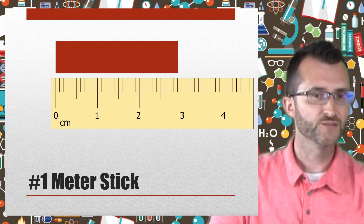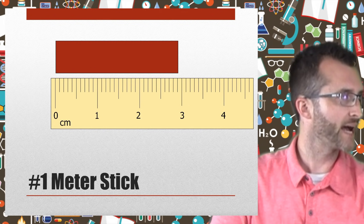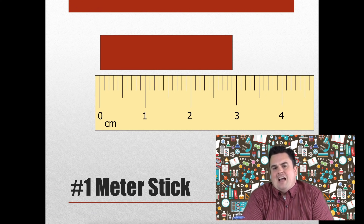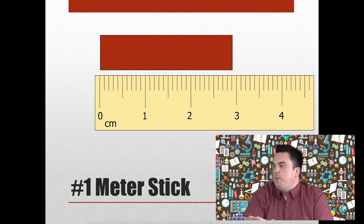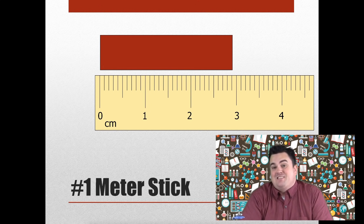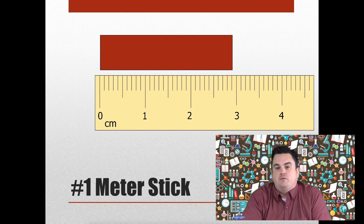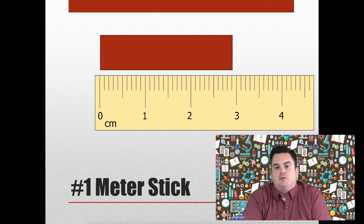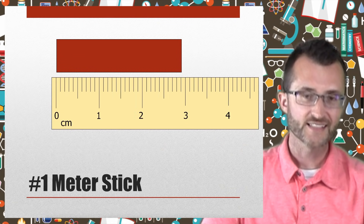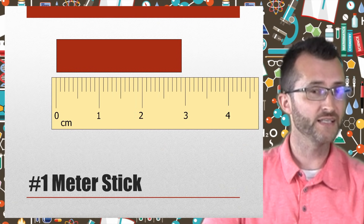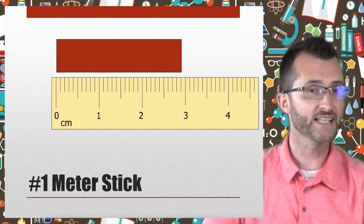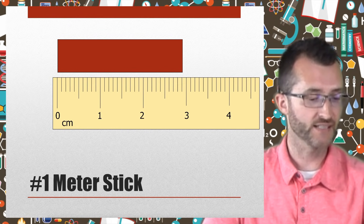So Fu, what did you get for the length of the red object? I got 2.9. I'm sorry — 2 and 9 tenths. That's not correct either, and you're also missing a unit. 2.9 centimeters. Alright, technically this should probably be 2.90 centimeters. We're going to talk about why a little bit later.